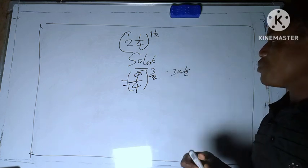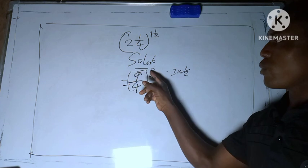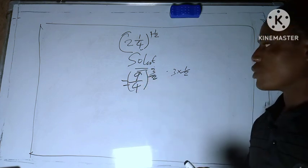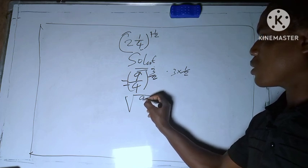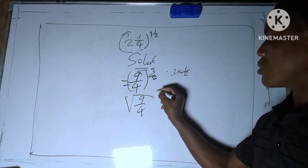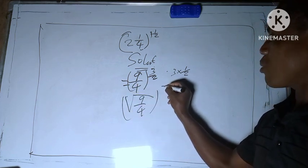So we are going to introduce square root to this whole equation. So we have square root of 9 over 4 raised to power 3.